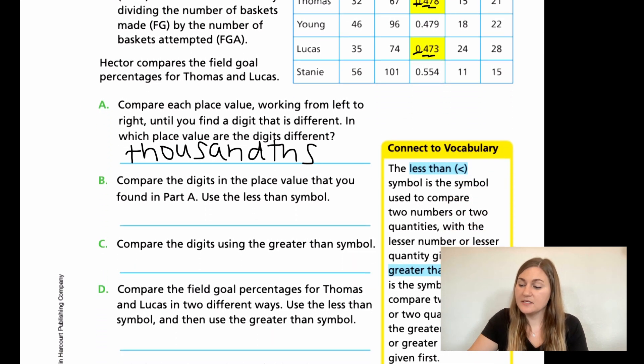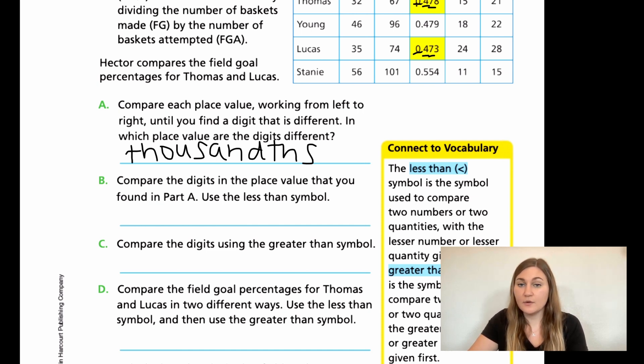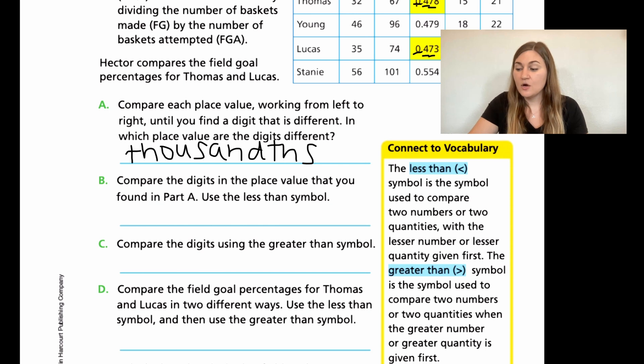And then for B, it says compare the digits in the place value that you found in part A. Use the less than symbol. So if we look over to the right in that connect to vocabulary, the less than is facing with the smaller side on the left and the bigger side on the right, almost like an alligator mouth. So if we're comparing these numbers, just the digits in the place value, and we're using the less than sign, we would have to put the number that's smaller first so that we can say three is less than eight.